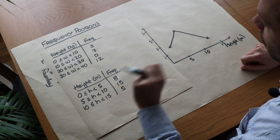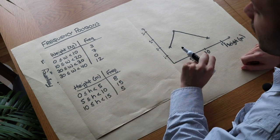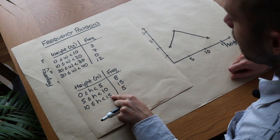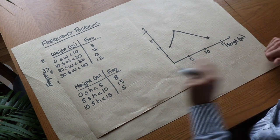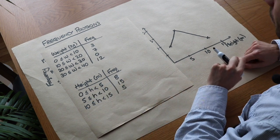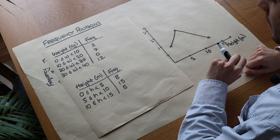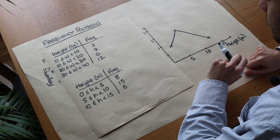Now in another video we look at cumulative frequency graphs. Now with cumulative frequency graphs you use the end point of each interval, so you use the 5, the 10, and the 15, whereas with frequency polygons you use the middle of each interval. So don't get confused between frequency polygons and cumulative frequency graphs.